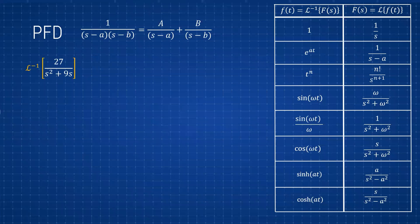Here we need to find the inverse Laplace of 27 over (s² + 9s). If we look in our table, there's no expression that looks like that. We can factor out 27, but there's nothing in the table with s² plus a number times s in the denominator — we have s² plus a number squared, but not a product involving s. So instead of panicking, we can rewrite this expression as the sum of fractions and hopefully find those expressions in the table.